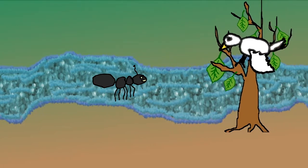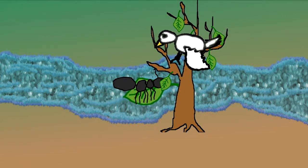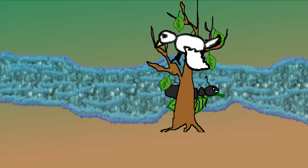A dove, sitting in a tree overhanging the water, plucked a leaf and left it fall into the stream close to her. The ant climbed onto it and floated in safety to the bank.